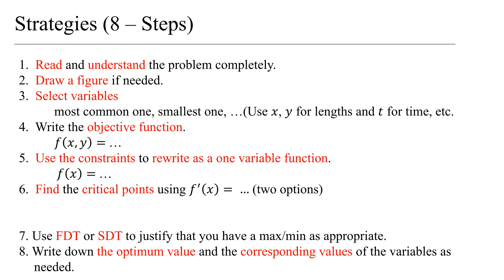Now that we know the basics, let's talk about the strategies to solve optimization problems. Optimization problems normally have eight steps — in related rate problems there are only six steps, but now we have eight. The first step is to read and understand the question completely. That's very important — read the problem multiple times if needed. While doing that, you can draw a figure to include the information visually.